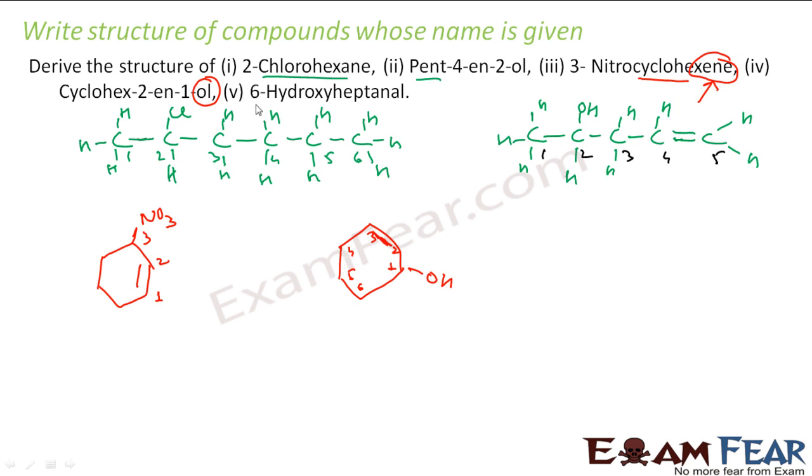Similarly, 6-hydroxyheptanal, that is 7. Hept is 7, so first draw 7 carbon: 1, 2, 3, 4, 5, 6, 7. Let us number it. Heptanal means at first position I have COH group. 6-hydroxy means at 6 position I have OH group. This is my structure.